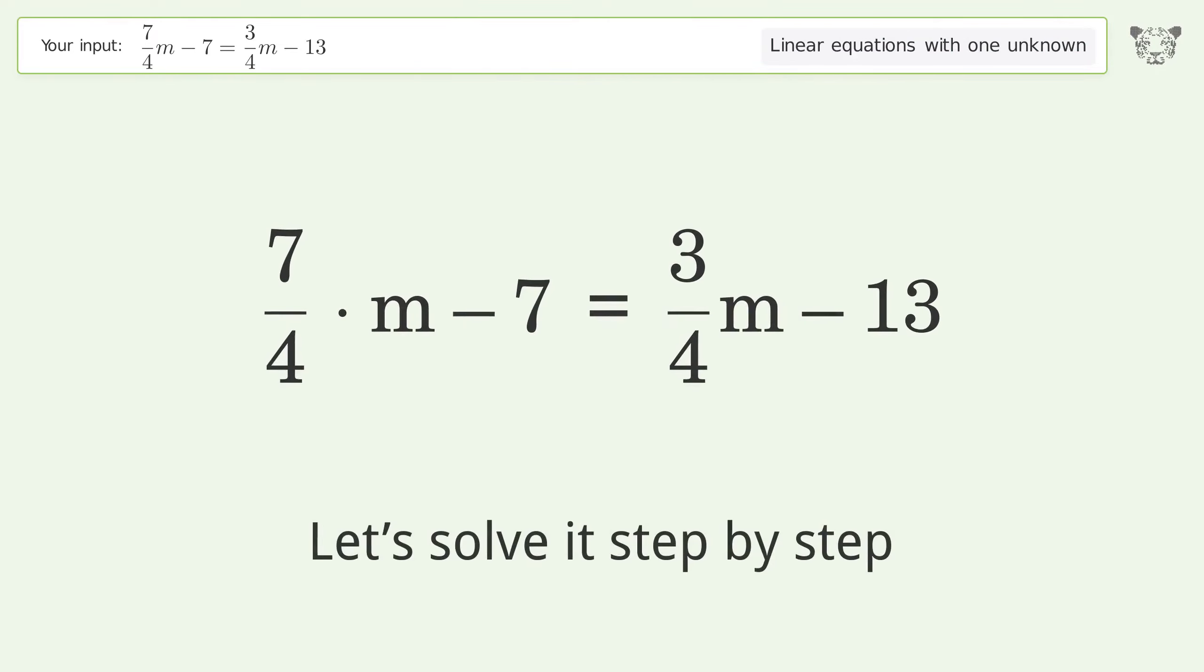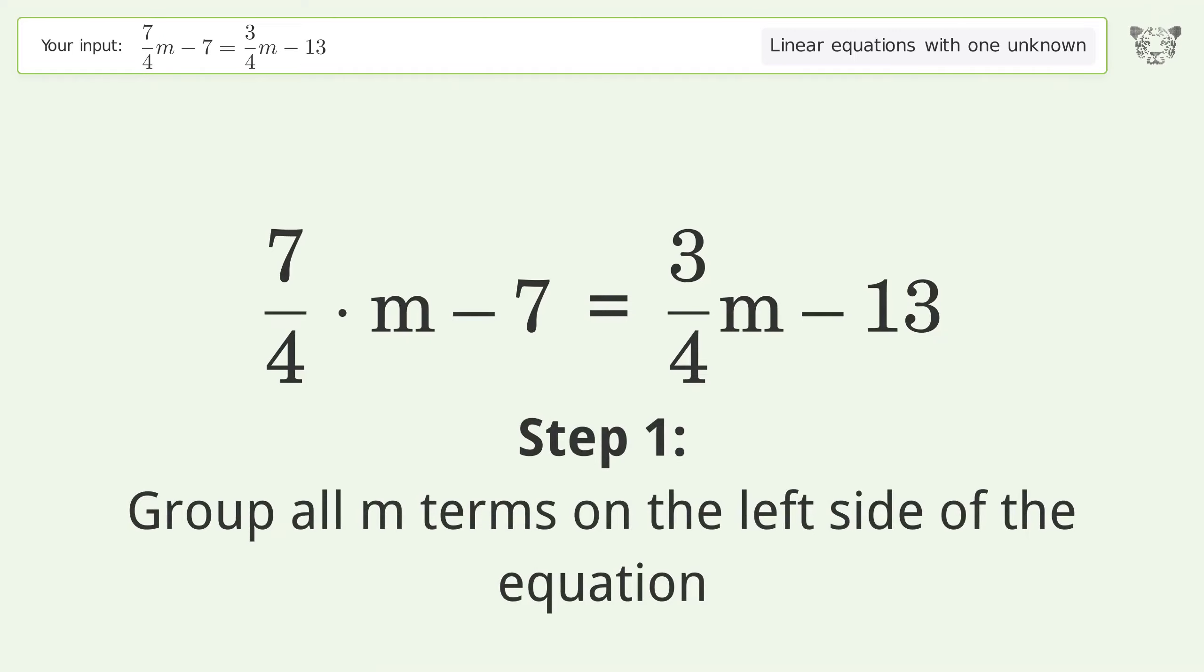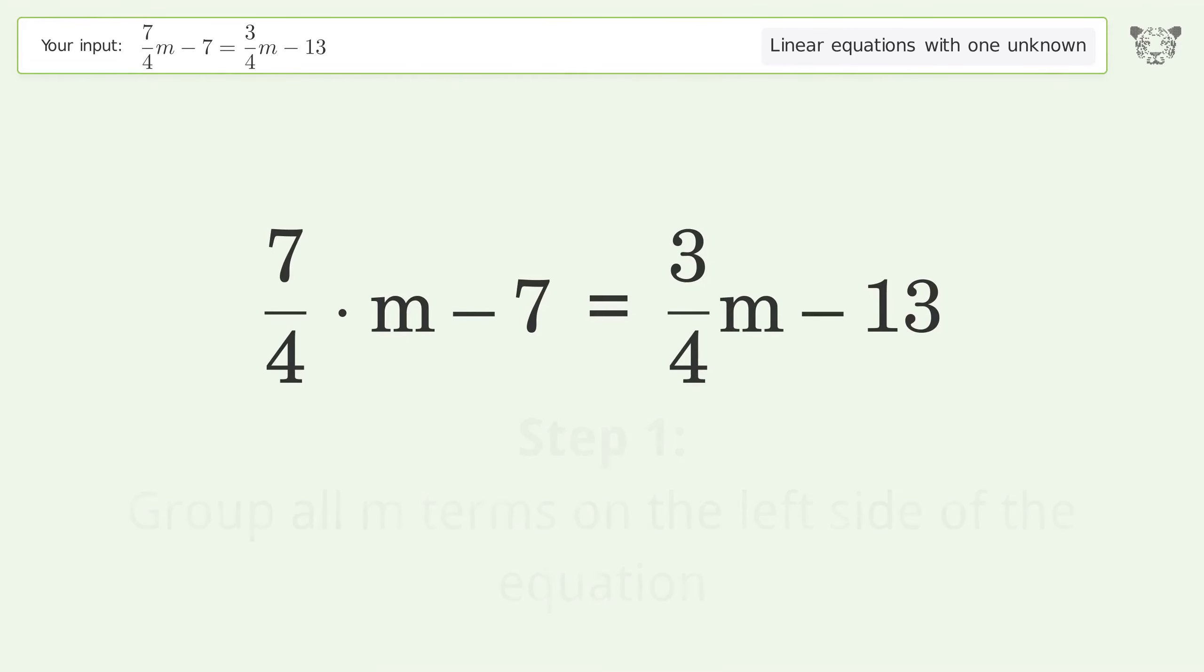Let's solve it step by step. Group all m terms on the left side of the equation. Subtract 3 over 4 m from both sides.